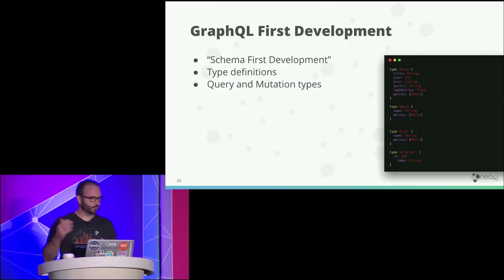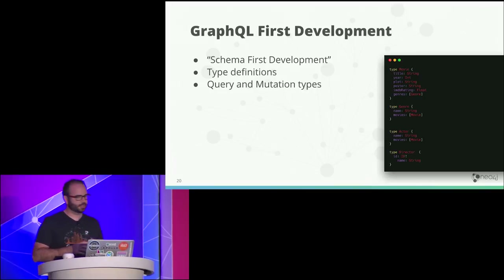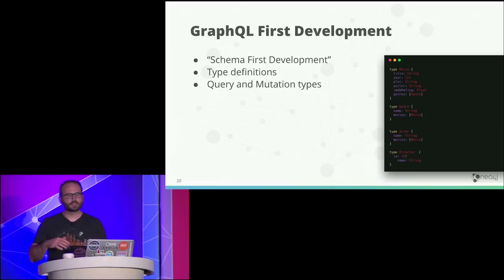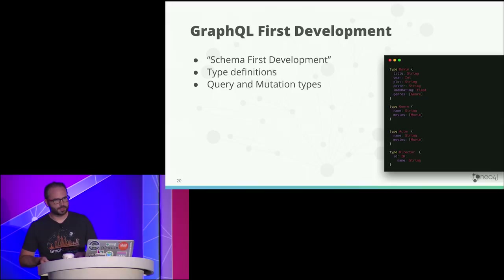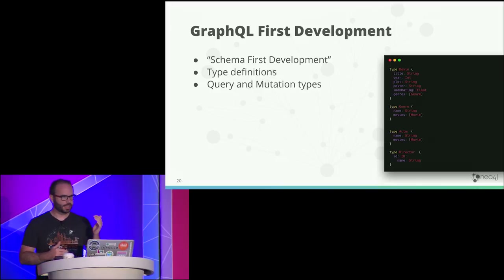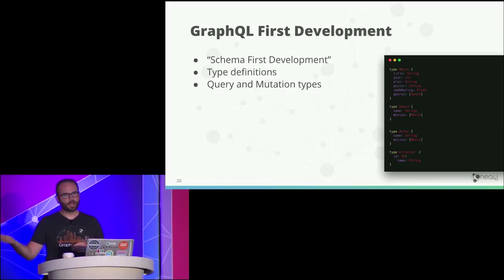There's an important concept called GraphQL-first or schema-first development. The schema becomes your specification for the API. You can actually use the schema to mock an API because you know the types and fields. Front-end developers write the schema, give it to the back-end folks, who mock it — so you can build out the front-end and back-end at the same time.